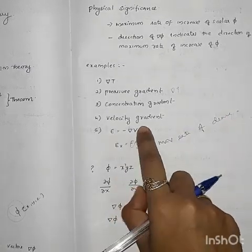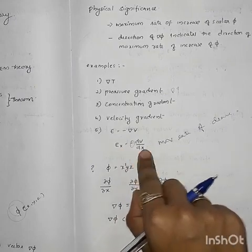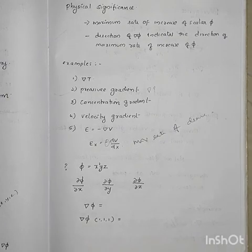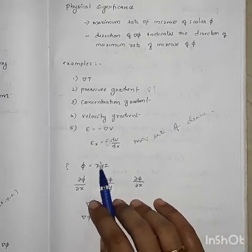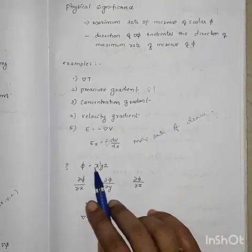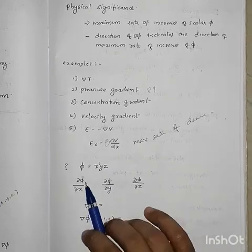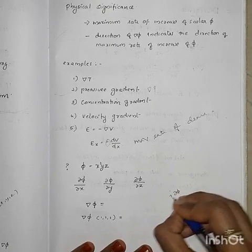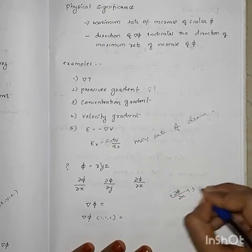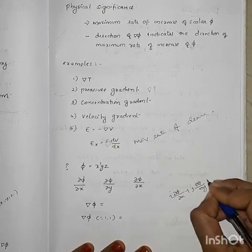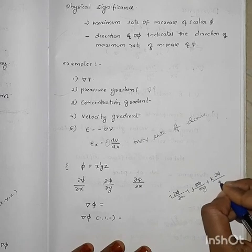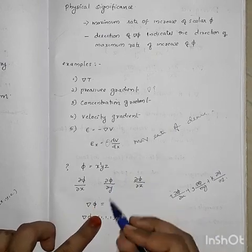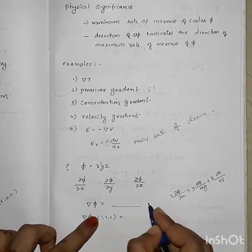E is equal to minus del V. This means that the intensity of the electric field is directed along the maximum rate of decrease of the potential. The decrease is due to the negative sign. So E_x equals minus dV/dx, with the full expression: E = minus del V.